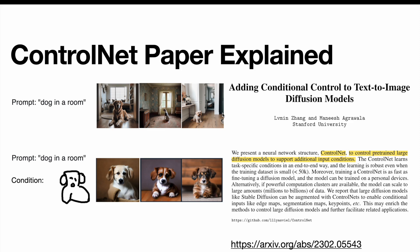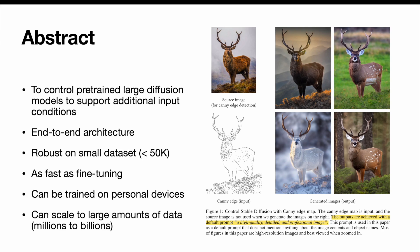ControlNet is an end-to-end architecture to control pre-trained large diffusion models to support additional input conditions. It's robust on a small dataset. Training can be as fast as fine-tuning a diffusion model. It can be trained on personal devices, and of course, can scale to large amounts of data to get a more problem-specific model.